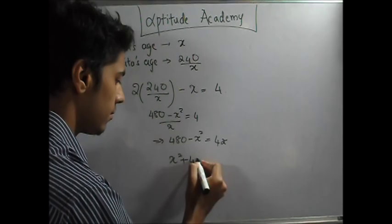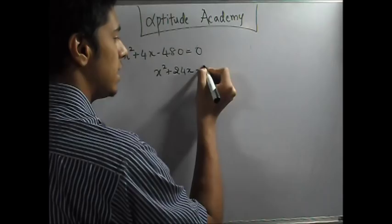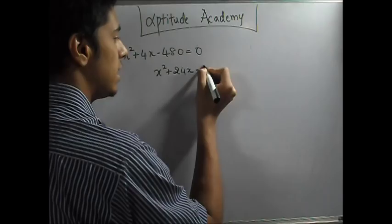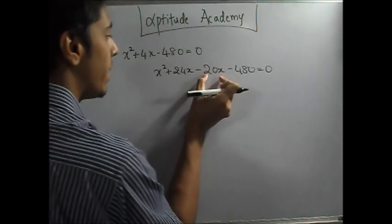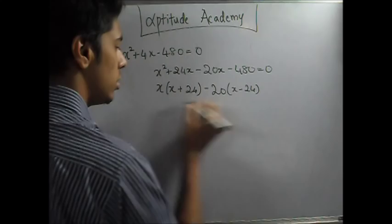Factorizing this gives you x squared plus 24x minus 20x minus 480 equals 0. Now 24 minus 20 is 4, and 24 times 20 is 480. Take x common: x(x plus 24) minus 20(x plus 24). So your factors will be (x minus 20) and (x plus 24).